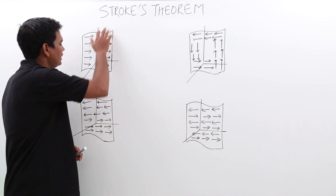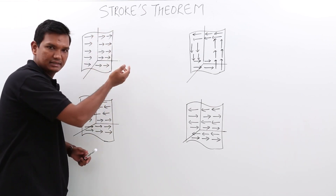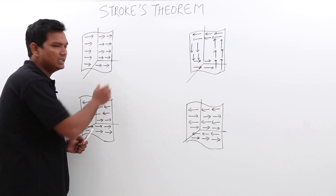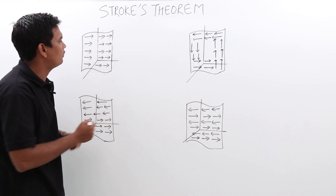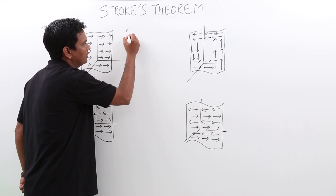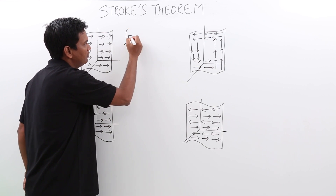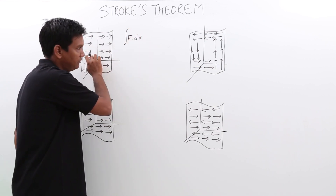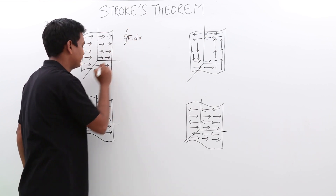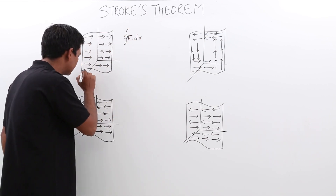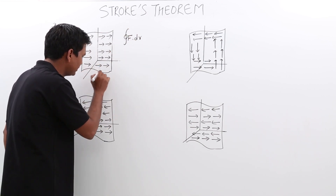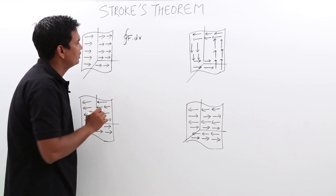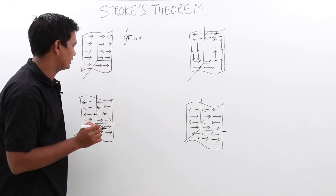These are x, y and z-axis. Now, there is a field. What I want to calculate is f dot dr. Let's say this is the field f over the line — over the line in the sense is nothing but this is the line for me. So, f dot dr, I want to calculate.